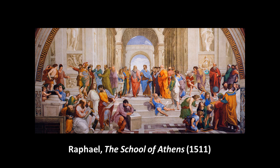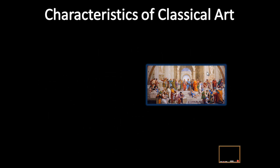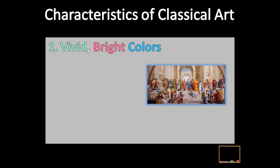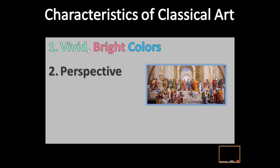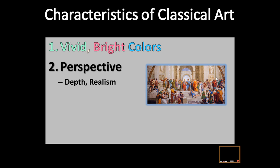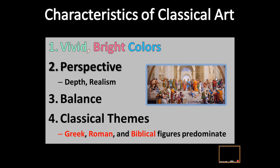Now let's look at the characteristics of classical art. I always show Raphael's School of Athens as the prototype. When thinking about classical art, call this painting to mind — it perfectly captures all aspects of classicism. First: bright, vivid colors that reach out and grab you. Second: perspective, depth, and realism. Third: balance — everything on one side is mirrored on the other. Fourth: classical themes — Greek, Roman, and biblical subjects predominate.